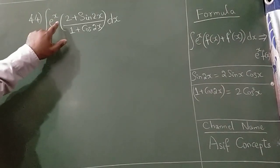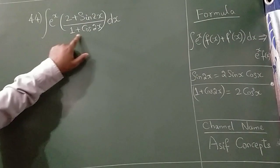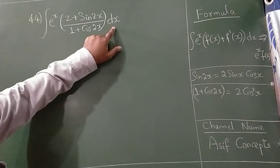Integration of e raise to x into 2 plus sin 2x divided by 1 plus cos 2x into dx.